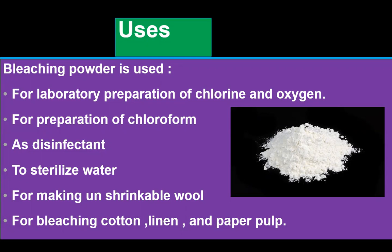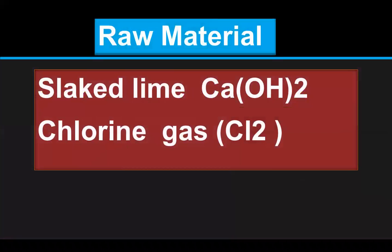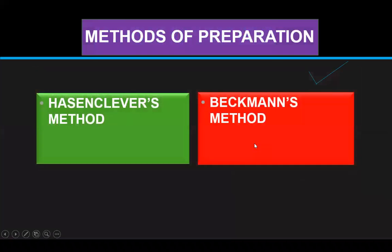Another use of bleaching powder is for bleaching cotton, linen, and paper pulp. The basic raw materials used for the preparation of bleaching powder are slaked lime and chlorine. Slaked lime in powdered form has the formula Ca(OH)2, and the other raw material is chlorine gas, Cl2.